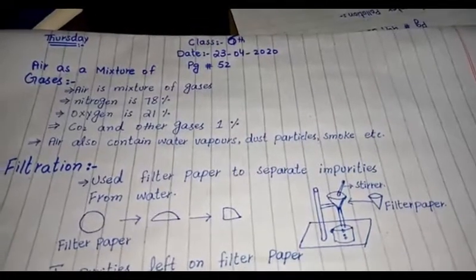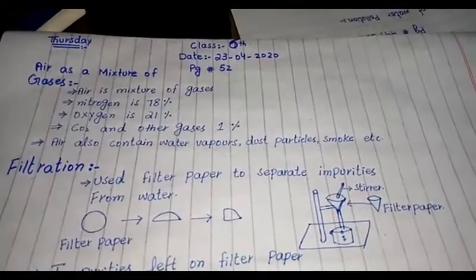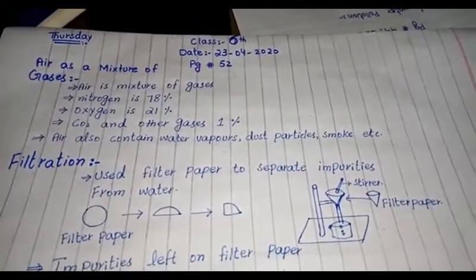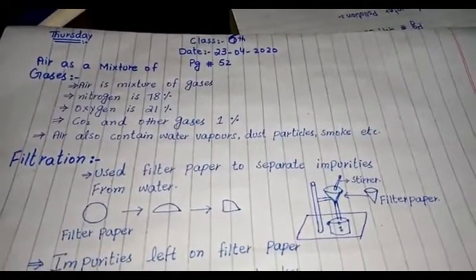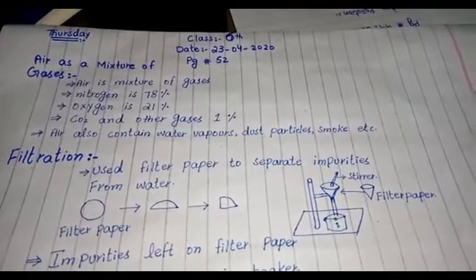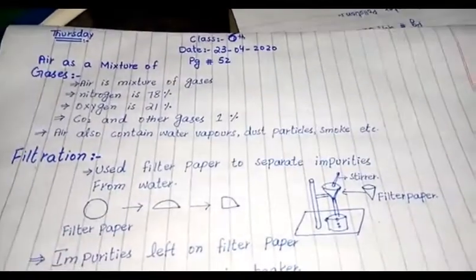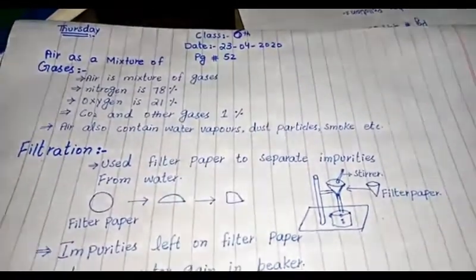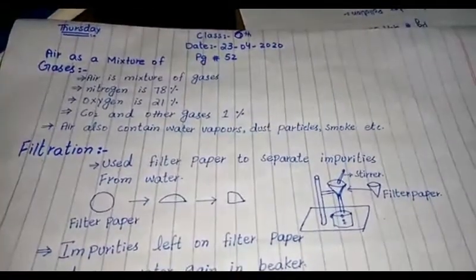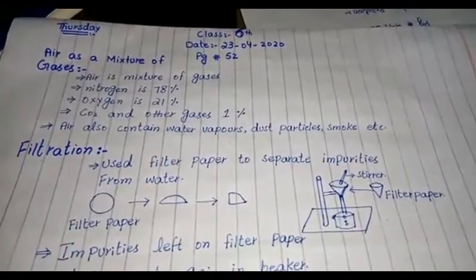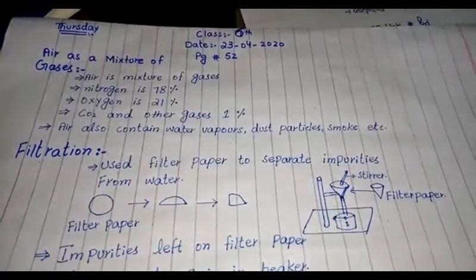Assalamu alaikum 6th class. Now chapter 23rd April ki diary ko discuss kareenge, page number 52. Today our topic is air as a mixture of gases.